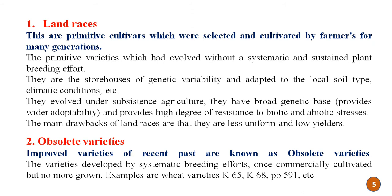We can use these landraces as a reservoir for today's breeding programs. The second type is obsolete varieties — improved varieties of the recent past that were developed by systematic breeding efforts, once commercially cultivated but no longer grown today. Examples are wheat varieties like K65, K68, and PB591.